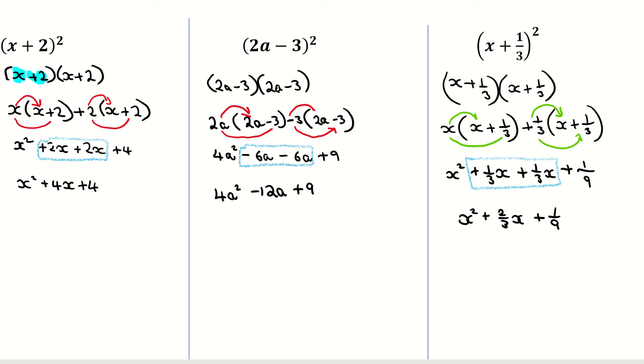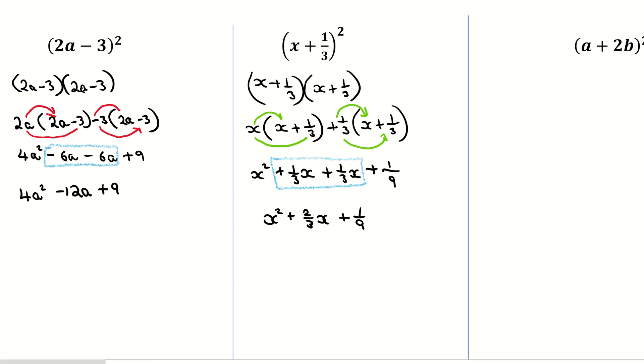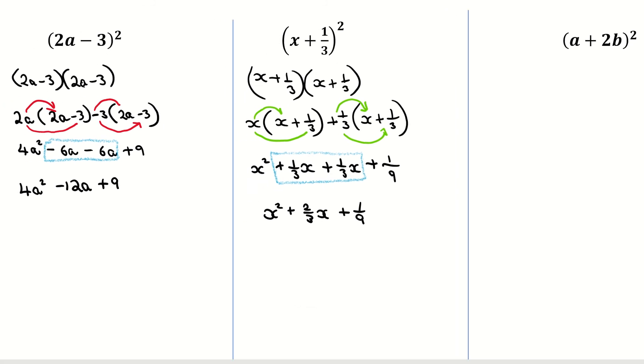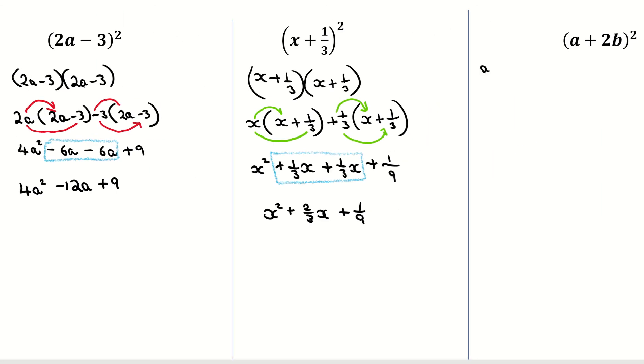Let's have a look here. So this example again is asking us to square out our brackets. So it's going to be a plus 2b multiplied by a plus 2b. So that's what the squared means. You're multiplying it by itself. And it's first term, which is a, times a plus 2b. And then second term, which is my 2b, multiplied by my second bracket, which is a plus 2b.